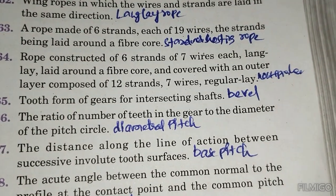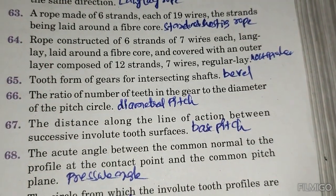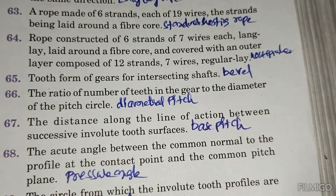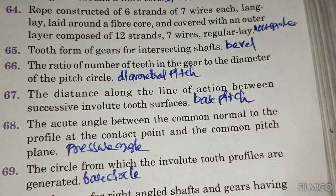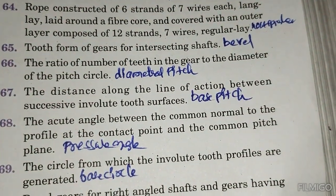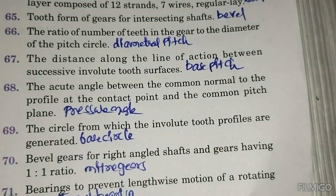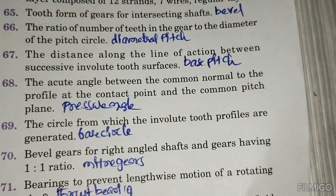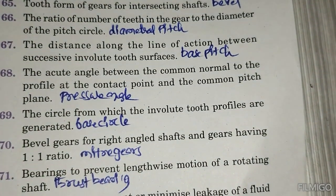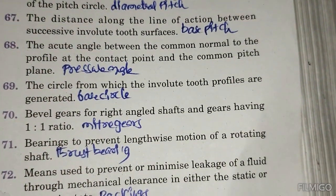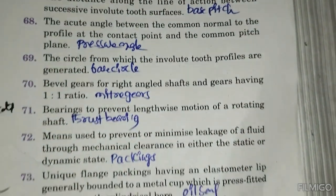A tooth form gear for intersecting shafts is a bevel gear. The ratio of the number of teeth to the diameter of the pitch circle is the diametral pitch. The distance along the line of action between successive involute tooth surfaces is the base pitch. The angle between the common normal to the profile at the contact point and the common tangent to the pitch circles is the pressure angle. The circle from which the involute tooth profiles are generated is the base circle.